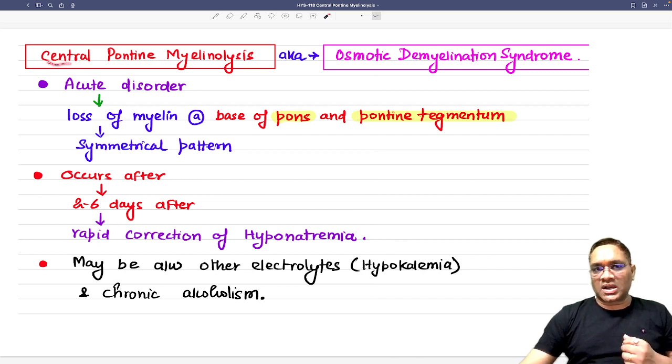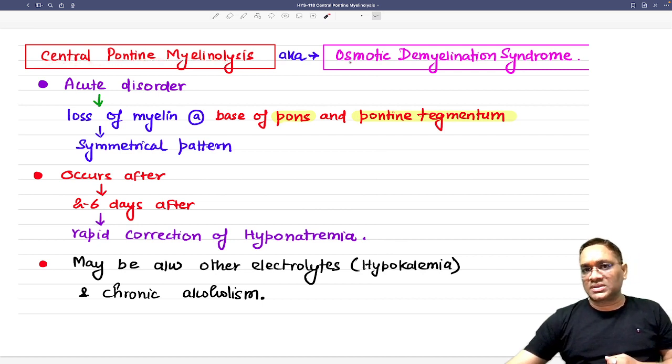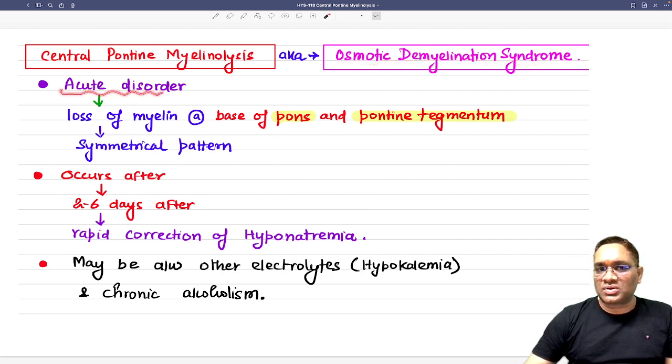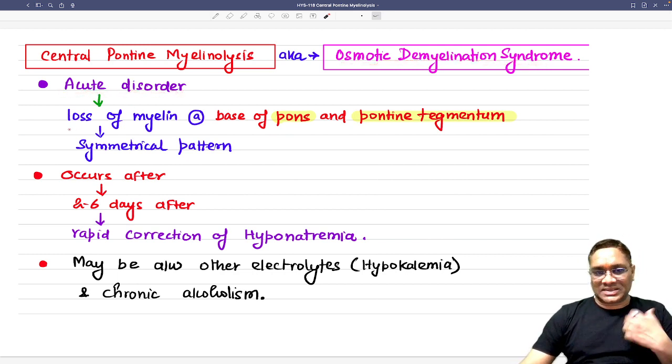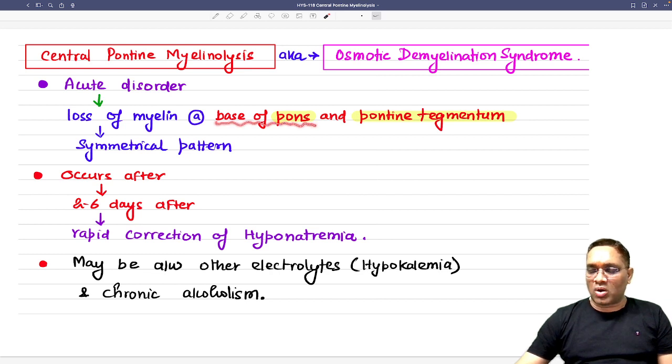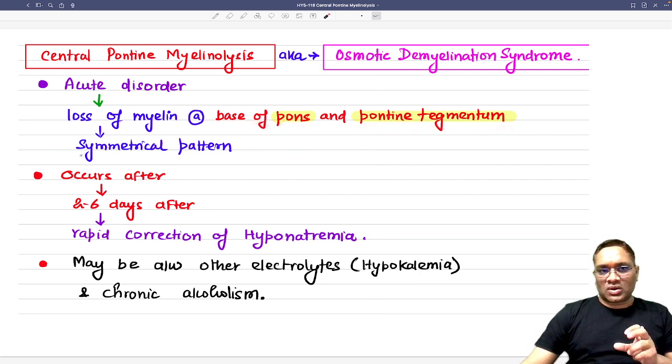So what is this central pontine myelinolysis or osmotic demyelination syndrome? This is an acute disorder where you will find loss of myelin, and this loss of myelin will be seen mostly at the base of pons and pontine tegmentum area. And this loss will be symmetrical in pattern.